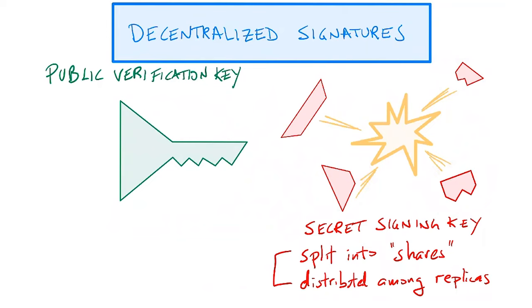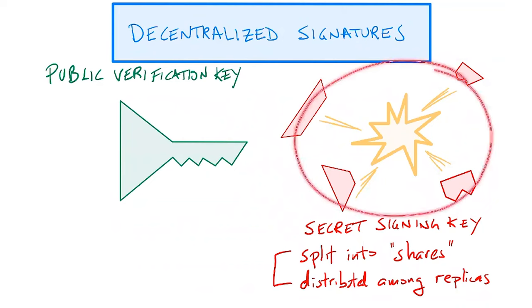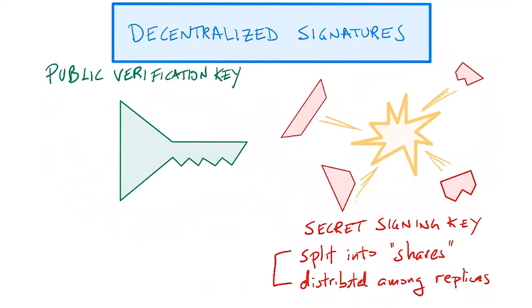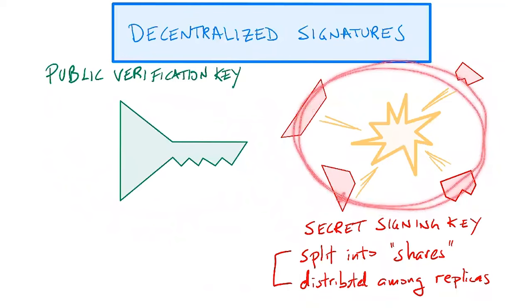Of course, this creates a technical challenge: the shares are distributed among all the nodes in the network, and when a request to sign a message comes to the network, these nodes have to cooperate and run an interactive protocol that allows them to generate a signature on a message or transaction using these shares — but they can't combine the shares together on a single machine. So they have to use some advanced secure distributed cryptography to do this. That's what decentralized signatures are at a super high level.